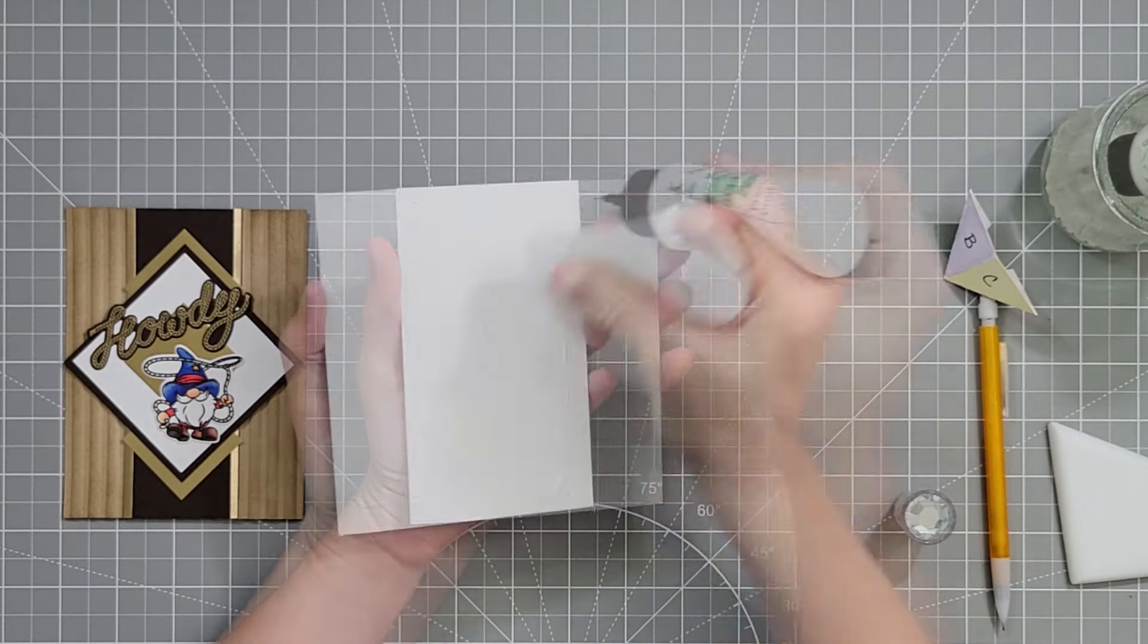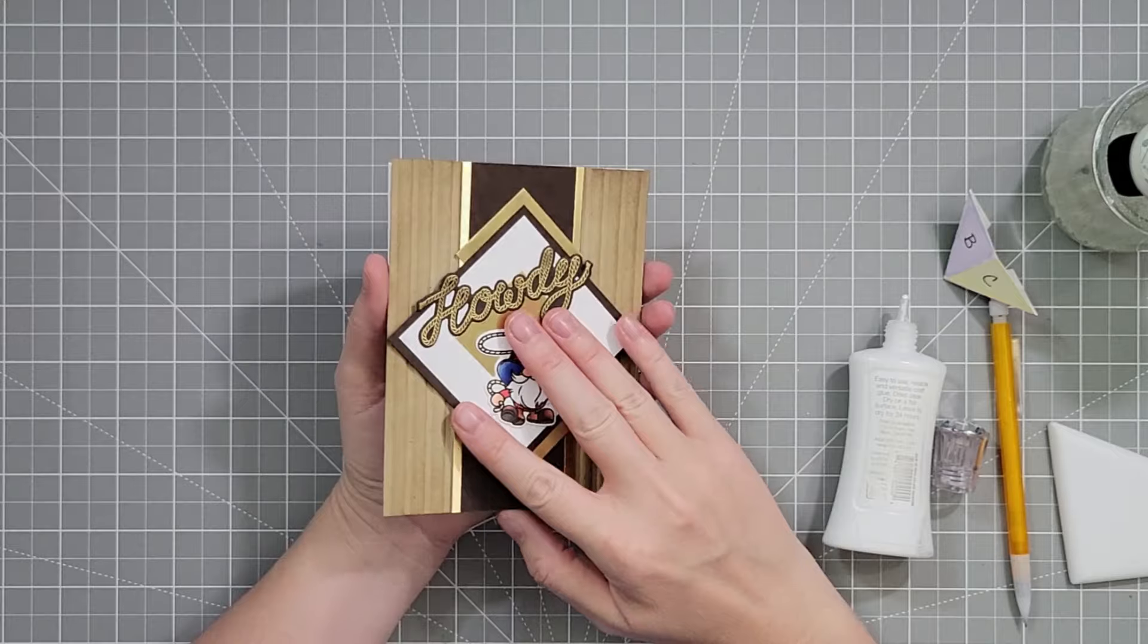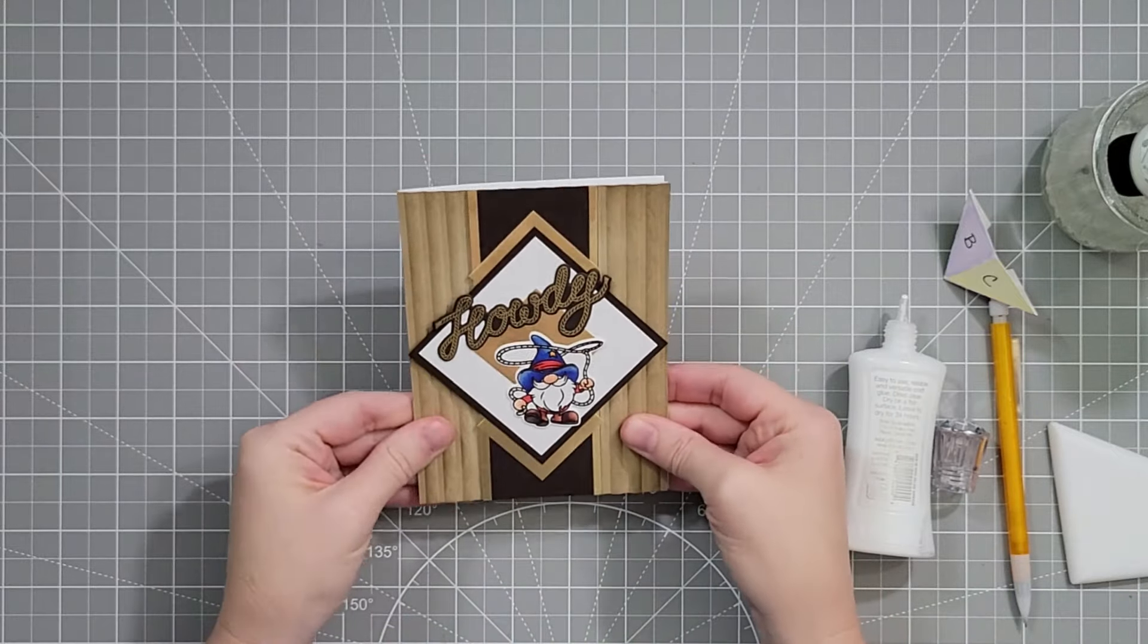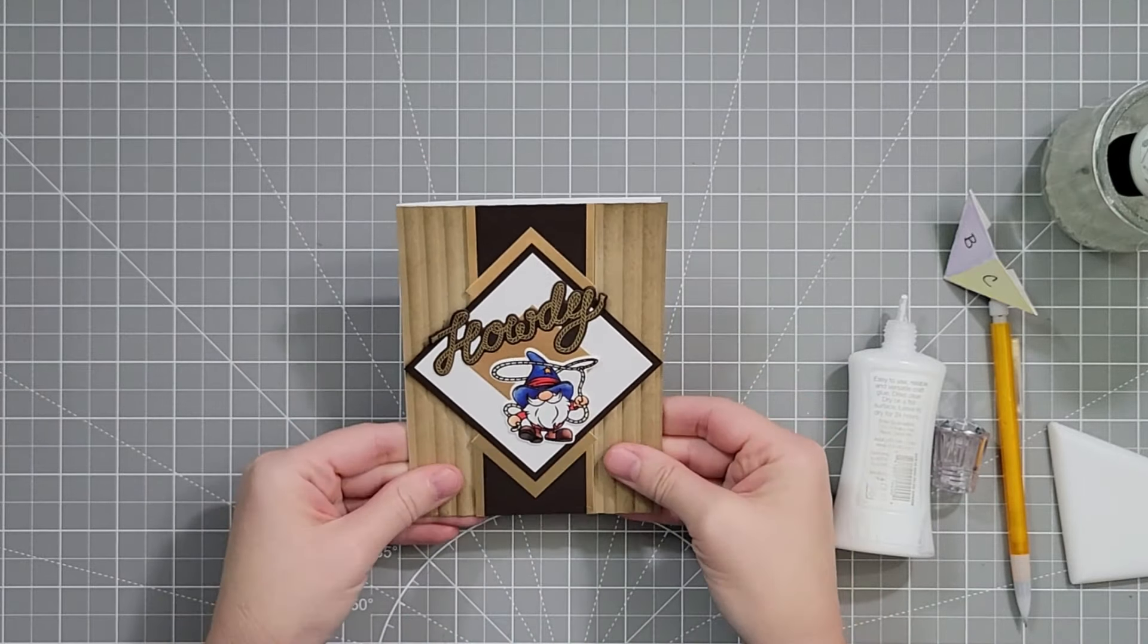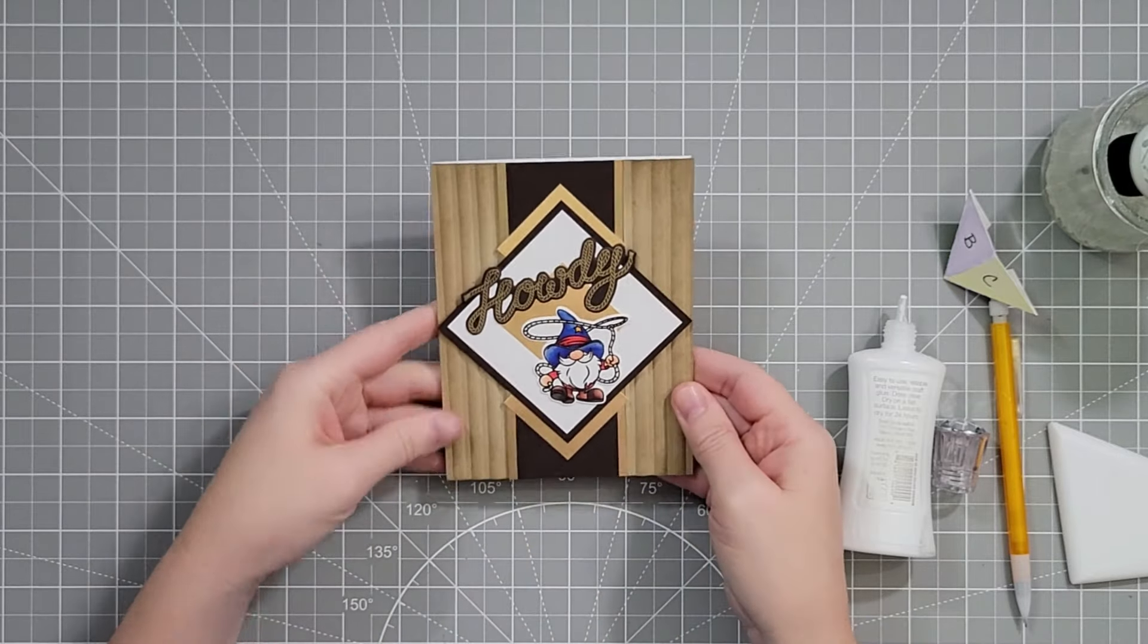Then I'm going to add glue all over the front of my card and add my panel on top. I like to wait until the end to do this in case I have a problem with the mechanism or I have a problem with my decorations on the front of the card. Then there's more ways to recover if I just wait.